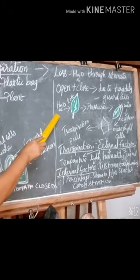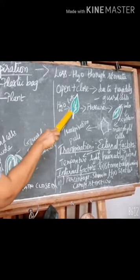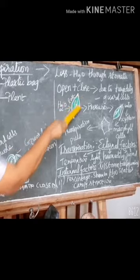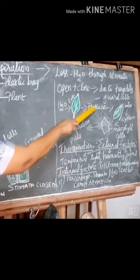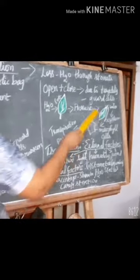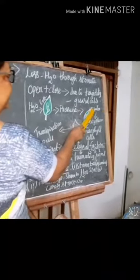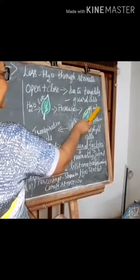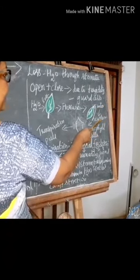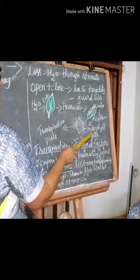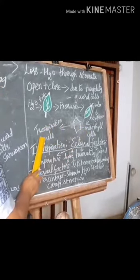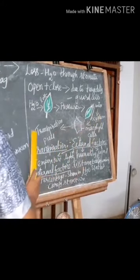Water is lost during evaporation; pressure is created at the top. The water then enters into the xylem, from which it passes on to the mesophyll cells. This is called the transpiration pull.